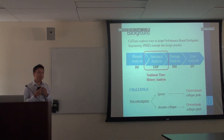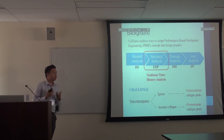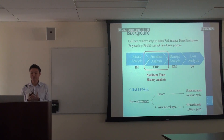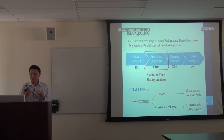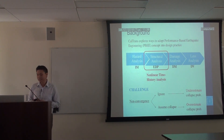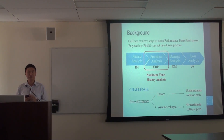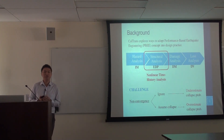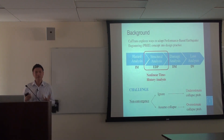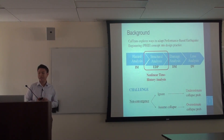The motivation of the project is to explore ways to adopt performance-based earthquake engineering concept into design practice. This requires performing nonlinear time history analysis under suites of ground motions with different intensity. The engineering demand parameters are used in conjunction with the component fragility curves to come up with a decision variable such as the probability of collapse and the estimate of the downtime.